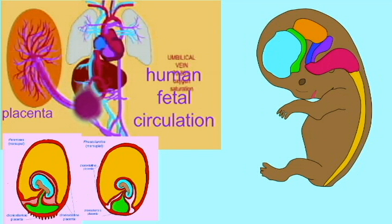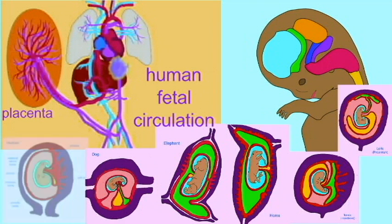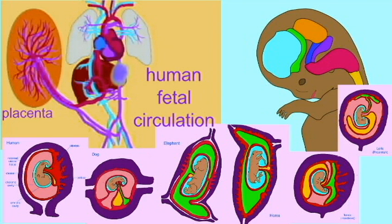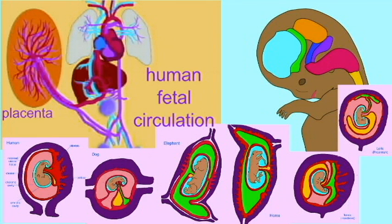The type of placenta found in placental mammals, or Eutherian mammals, involves not only the fetal cells from the chorion, but also blood vessels from the allantois. So it is properly called a chorioallantoic placenta, because it gets contributions from these two extraembryonic membranes — the chorion and the allantois.